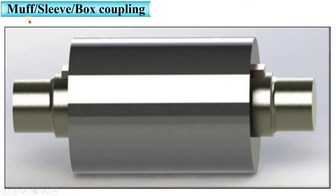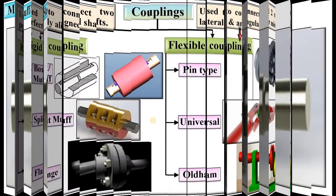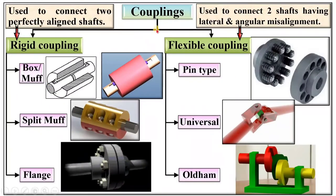Here you can see this is the Muff Coupling, sometimes it is called Sleeve Coupling, sometimes it is called Box Coupling also. This is the classification of couplings as we have discussed in an earlier video. So let us start with Box or Muff Coupling.